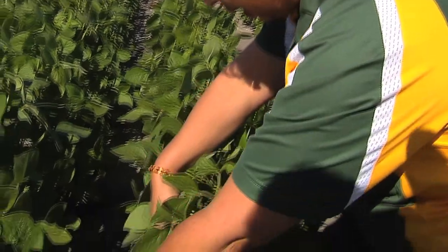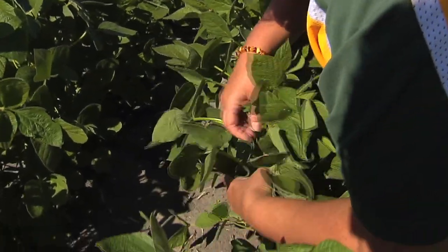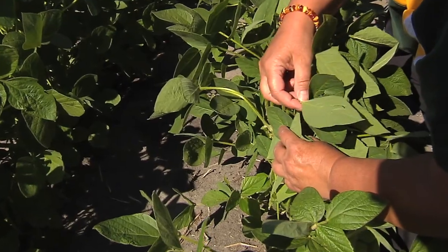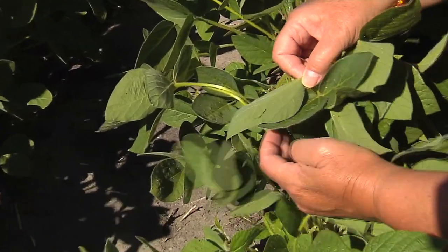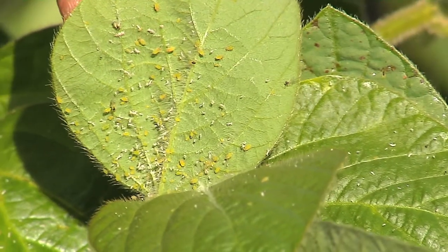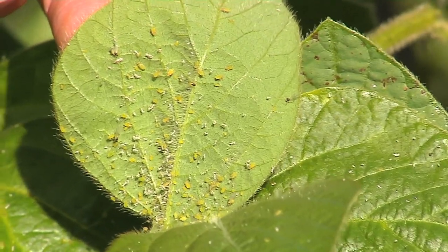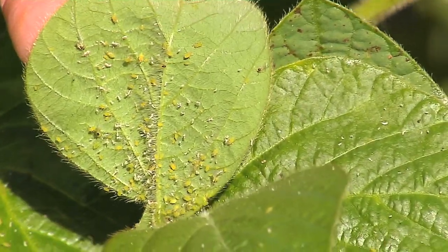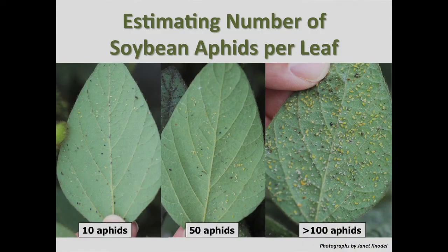You start by looking at the bottom of the plant looking for the aphids, and you need to be able to identify them. They're a small yellow aphid with black cornicles or tail pipes, about 1/16th of an inch long. They may be winged or wingless. Because they're so small, you can estimate the number of aphids once you have an idea of how many aphids look like for 10 aphids, 50 aphids, and 100 aphids per leaf, and then you can estimate them.